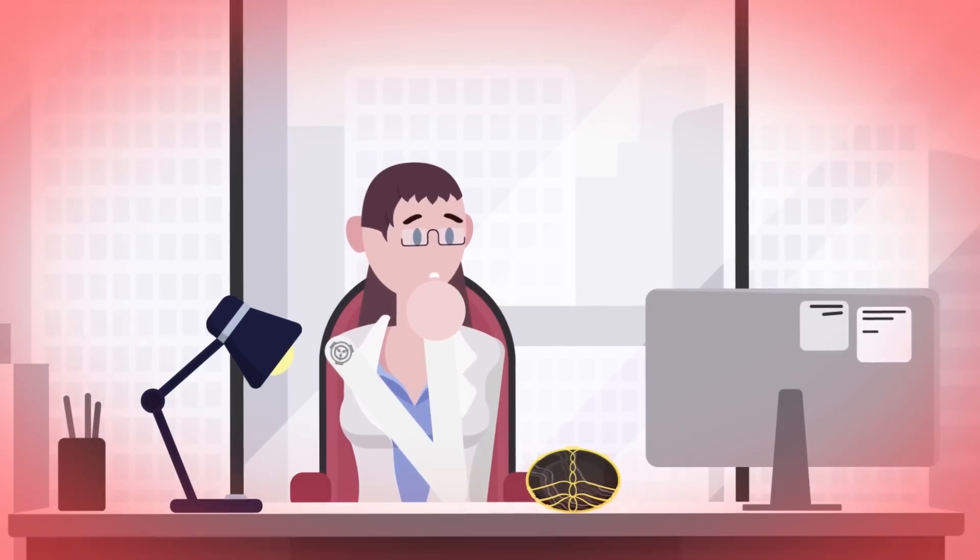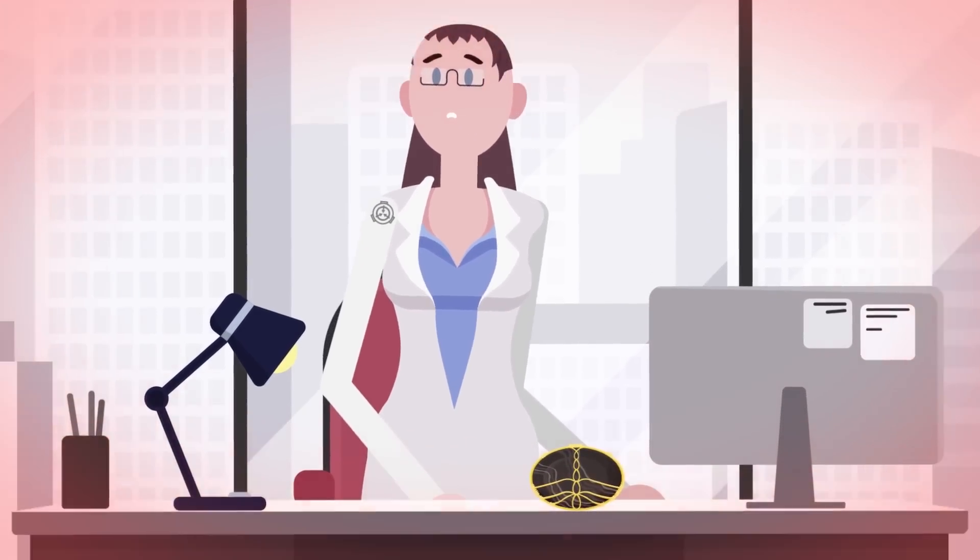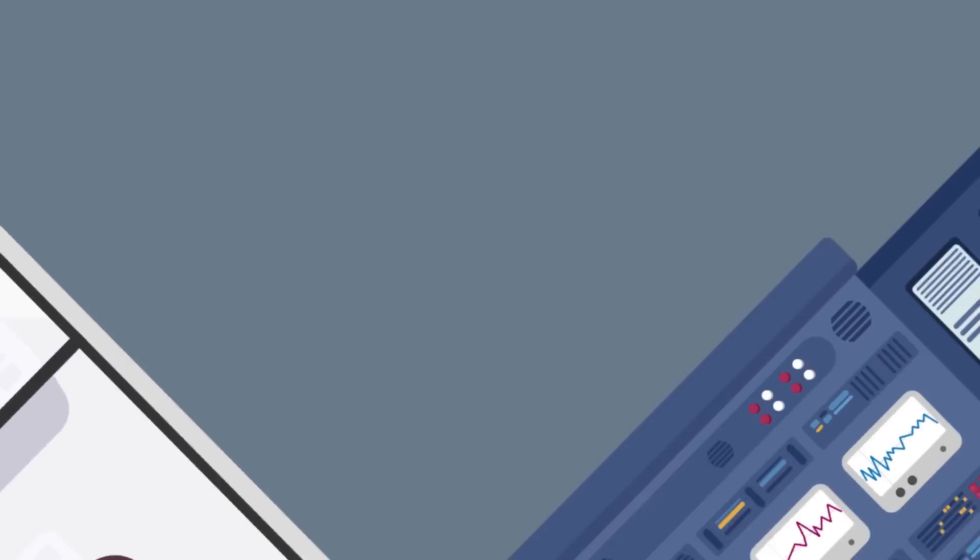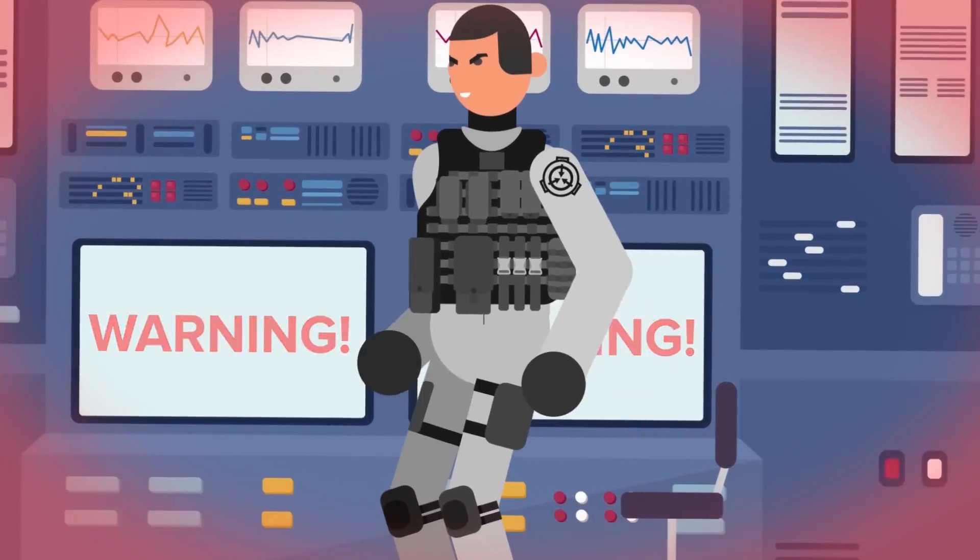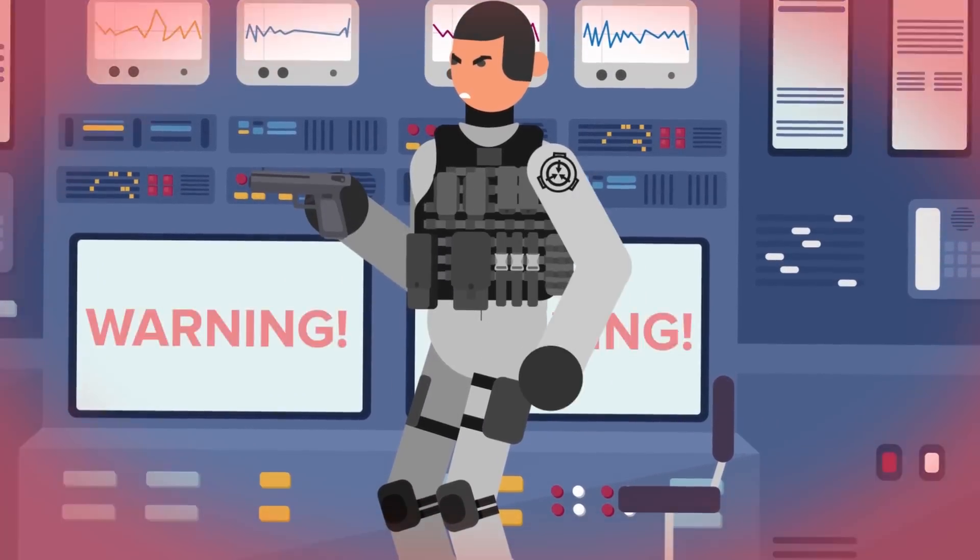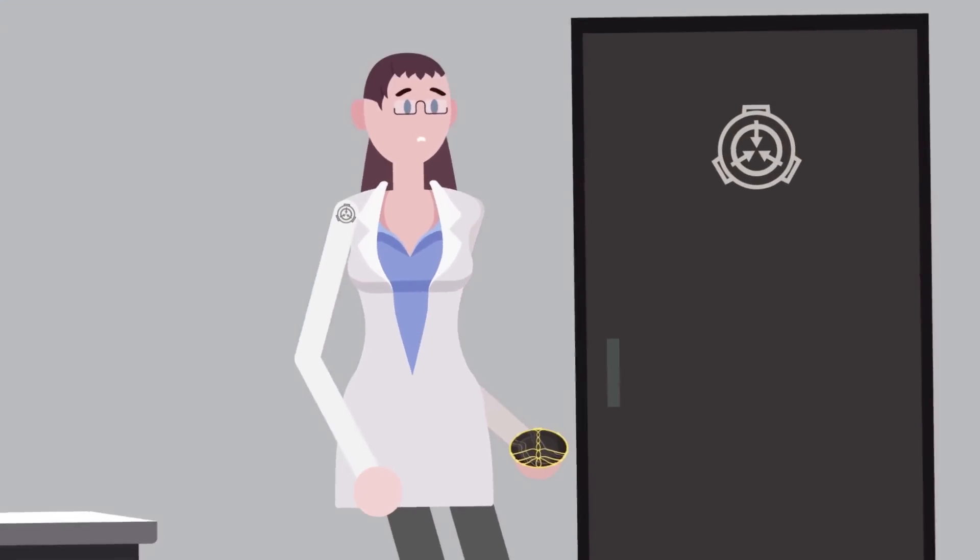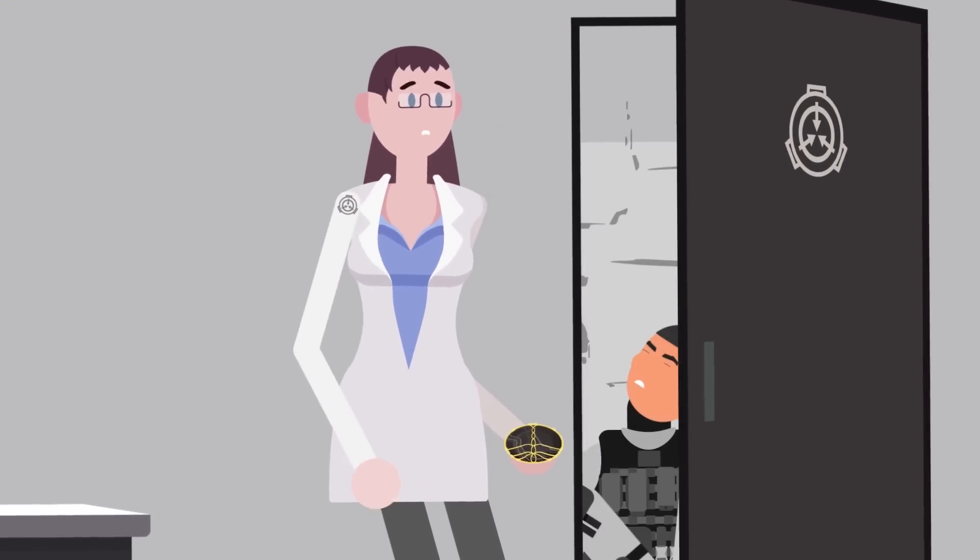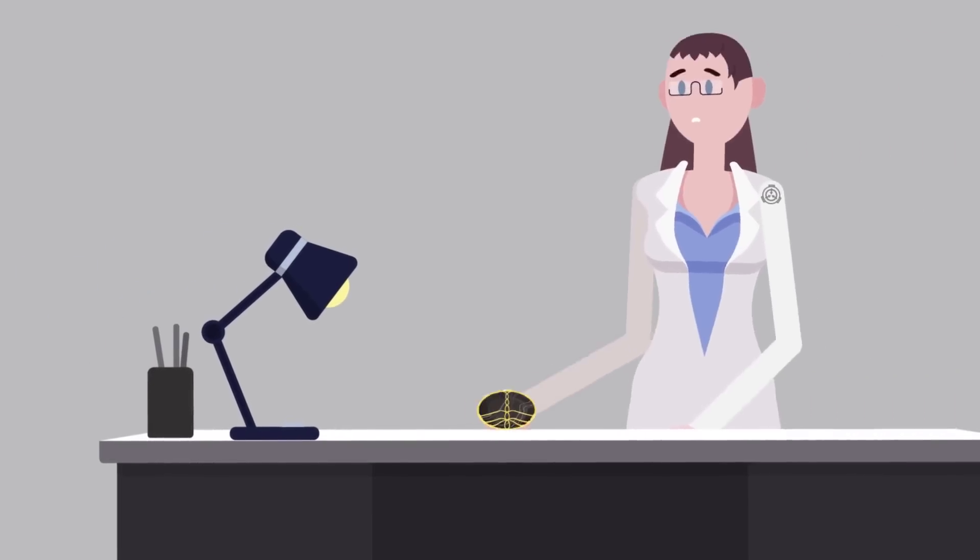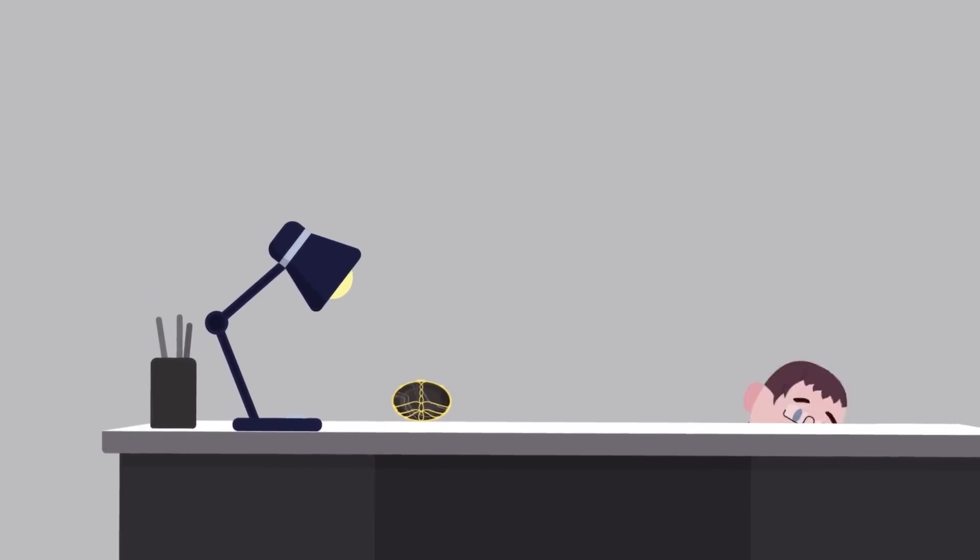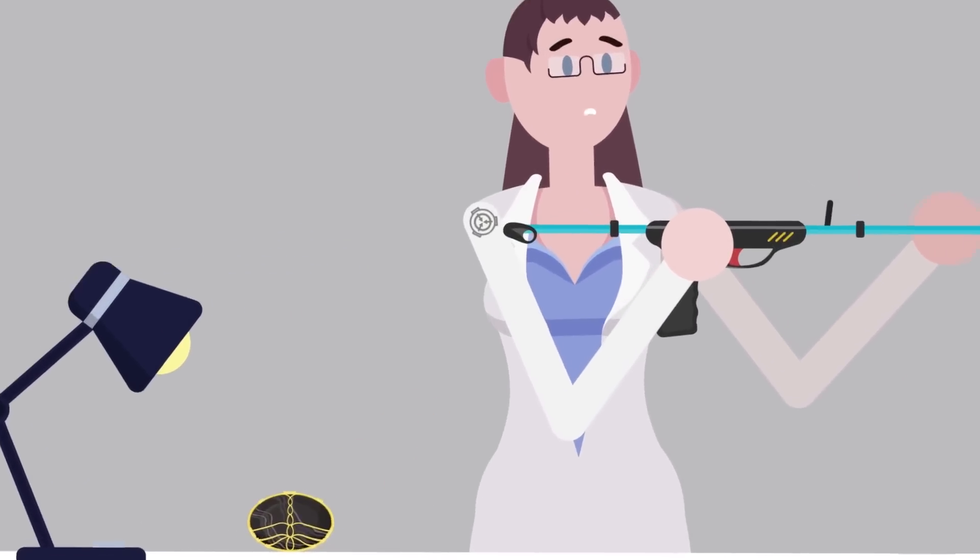A horn blared, shattering her concentration and alerting her to the coming disaster. It was a warning, a sign that something had breached containment. Only it wasn't something trying to break out, it was something breaking in. Hurriedly, she sat down the lock and opened a hatch in the floor, removing a harpoon gun, outfitted especially for taking on powerful, anomalous entities.